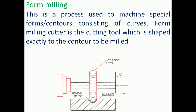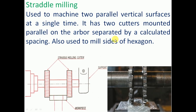Form milling is the process used to machine special forms or contours consisting of curves. The form milling cutter is the cutting tool shaped exactly to the contour to be milled — whatever shape is to be produced on the work piece, the cutter must have that same shape. Here, a convex form milling cutter is mounted on the arbor, and the same curved contour is produced on the work piece.